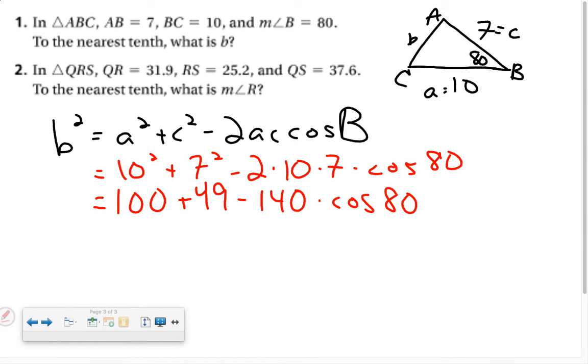Okay, so I've got 149 minus 140 times the cosine of 80. At this point, you should be able to type everything directly into your calculator. So, 149 minus 140 times the cosine of 80. And B squared is approximately 124.7, which makes B approximately 11.2.